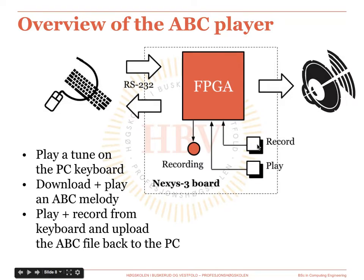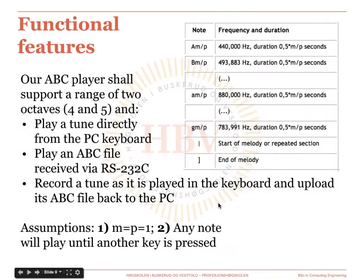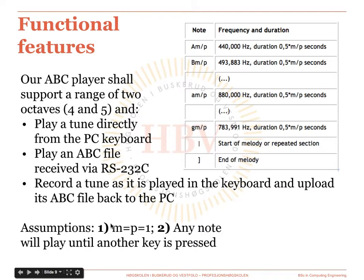When the record button is pressed a second time, the LED will switch off and the ABC file corresponding to the tune that has just been played will be uploaded to the PC. Of course, each of these two subsequent stages shall preserve the functionality of the previous stages. In this slide, you find a more detailed description of the required functionality of our ABC player. Notice in particular the two assumptions that are recommended to facilitate your work.